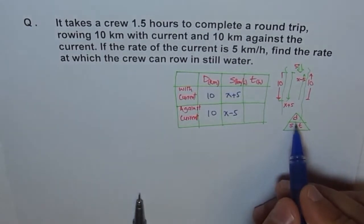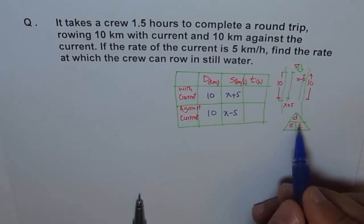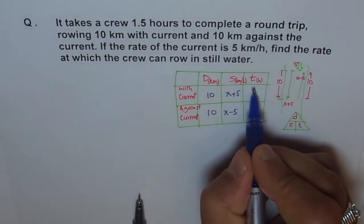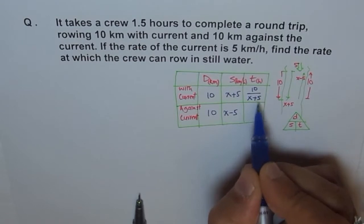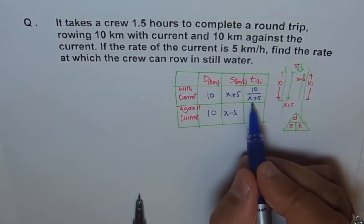Now, how much time do you take to do it? Time taken is this little triangle here. Distance speed into time. So, time is distance over speed, right? So, we get distance of 10 over speed of X plus 5 here. This is with current. Lesser time because the denominator is higher.